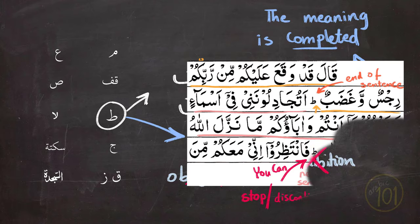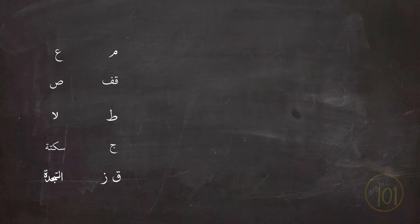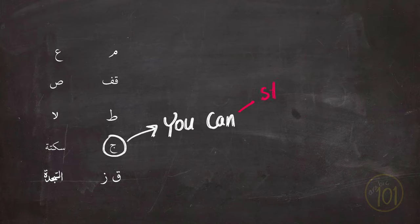So the ط is an absolute stop. Next is the sign of جيم. And it is exact same in all publications of Mus'haf. And it is that you can stop or you can keep going. It is like 50% go, 50% stop. It is entirely up to you.